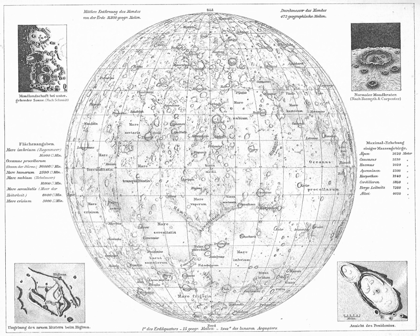Names for atmospheric features are informal at present; a formal system will be chosen in the future. The boundaries of many large features such as terrain, regiones, planetii and plana are not topographically or geomorphically distinct. The coordinates of these features are identified from an arbitrarily chosen center point. Boundaries may be determined more accurately from geochemical and geophysical data obtained by future missions.